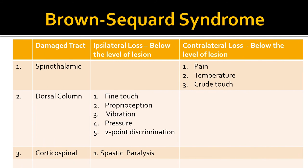In Brown-Séquard syndrome, the damaged tracts include the spinothalamic tract, dorsal column, and corticospinal tracts. Damage to the spinothalamic tract results in contralateral loss of pain, temperature, and crude touch. Damage to the dorsal column results in ipsilateral loss of fine touch, vibration, pressure, and two-point discrimination. Damage to the corticospinal tract results in spastic paralysis.